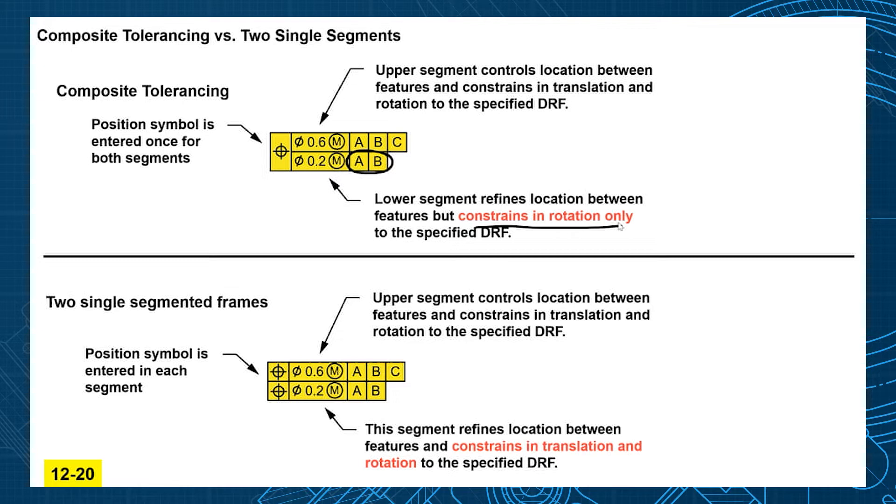So the top one is location to the datums. The lower one is rotation only, controlling the orientation of the features but still controls location between them.